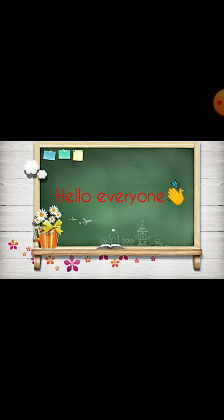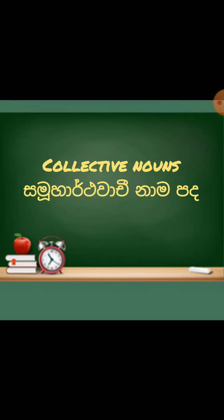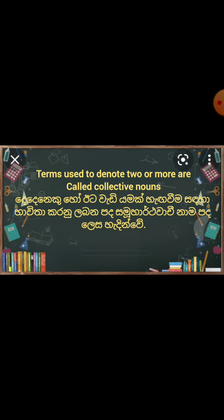Do you know that word meaning? Collective nouns mean samuhartha wachhi nama paddu. That means terms used to denote a group — these are called collective nouns. I think you could understand this word meaning. Let's look at some examples for this pattern.